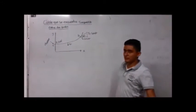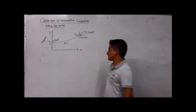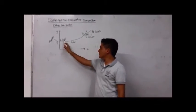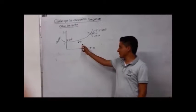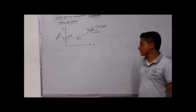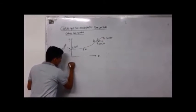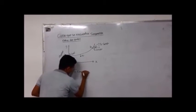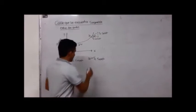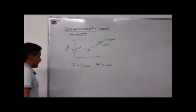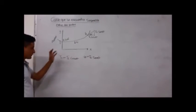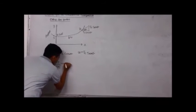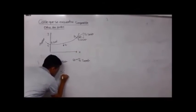A continuación vamos a hablar del cable que se encuentra suspendido entre dos puntos. Estamos en el plano coordenado x, y, y tenemos un alambre con dos puntos: el punto 1 con coordenada (0, 2) y el punto 2, y tenemos también el peso. De aquí podemos concluir que T1 es igual a T2 por el coseno de theta, y que la componente vertical es igual a T2 por el seno de theta. Derivando y con respecto a x, nos quedaría que dy/dx es igual a u sobre T.